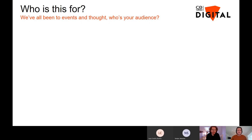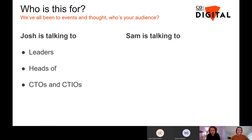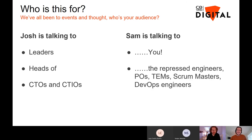So who is this talk for? It's aimed at a few different demographics. I'm specifically talking to leaders — heads of, CTOs, and CTIOs. And then also everybody else that isn't in that leadership function: the product owners, the repressed engineers, the POs, the Scrum Masters, the DevOps engineers — the people that will get this work done. Me and Josh want to give two different varied views to show how we've shaped this function and how we've delivered it from a practical level.